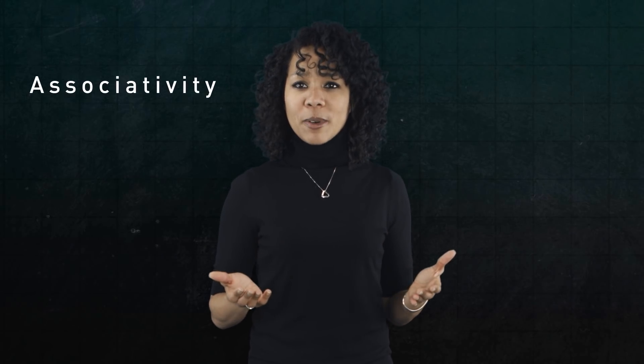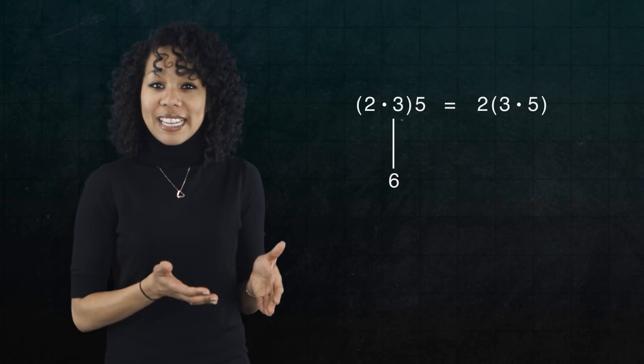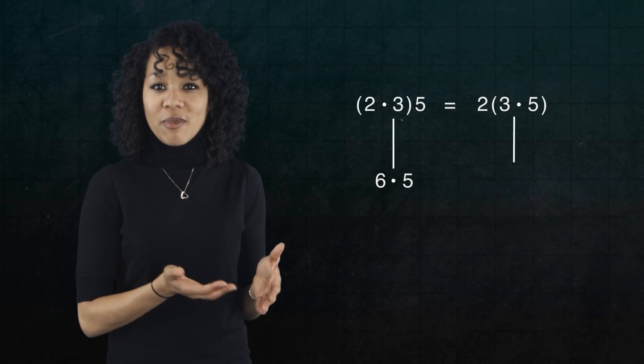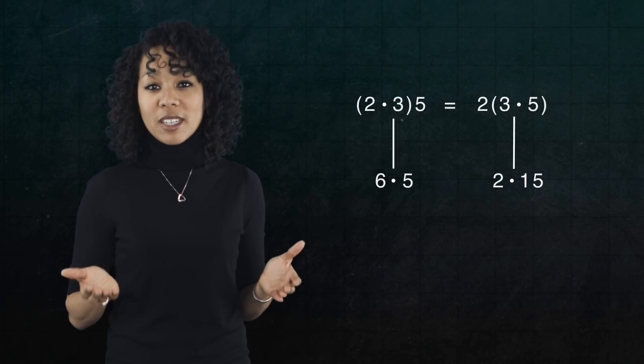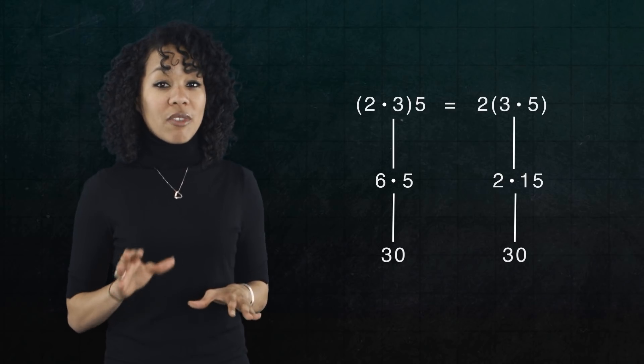Now, back to this fact from arithmetic. Multiplication of numbers is associative. Let's look at an example. Suppose we want to multiply 2 times 3 times 5. Well, we can multiply 2 and 3 to get 6, then multiply by 5. Or we can first multiply 3 and 5 to get 15, and then multiply by 2. Either way, the answer is 30, and so the two ways of multiplying three numbers are the same.